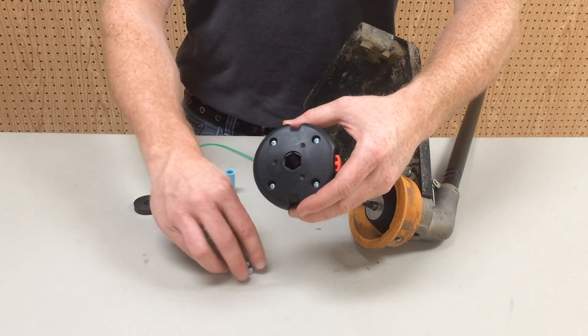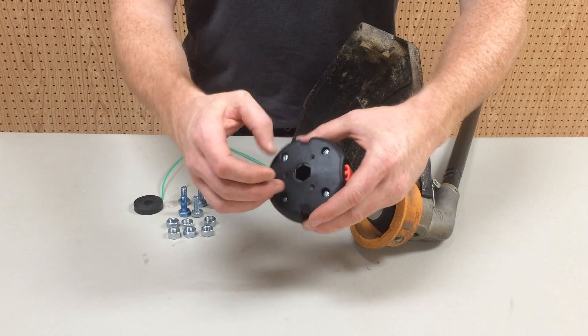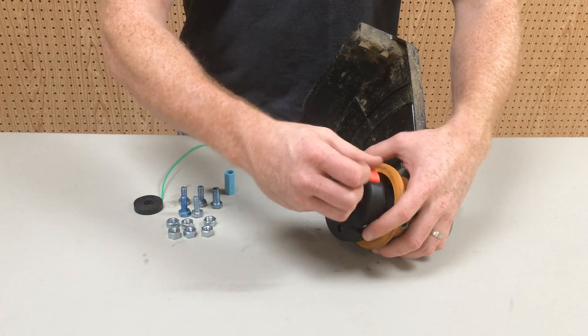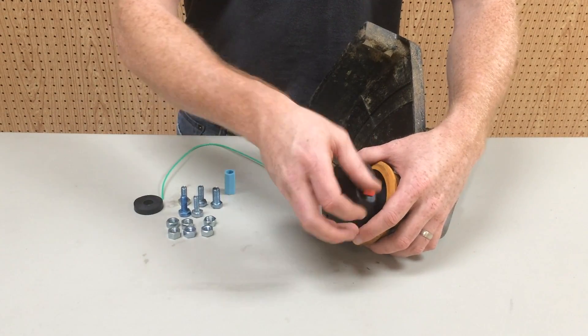Insert the nut into the hex cavity of the trimmer head. While holding the nut, screw the trimmer head onto the shaft.